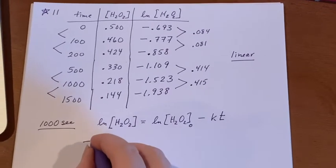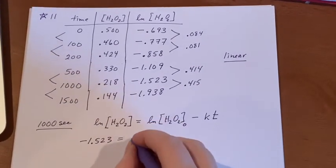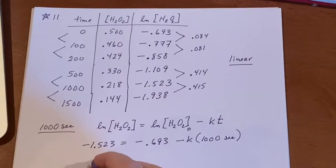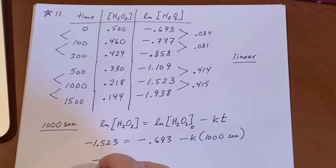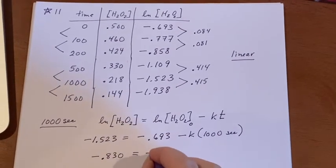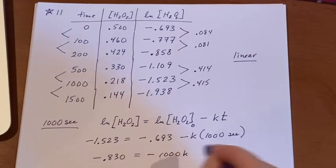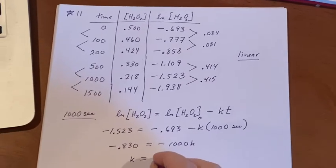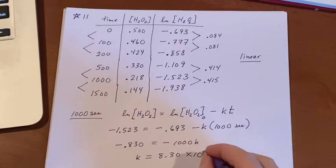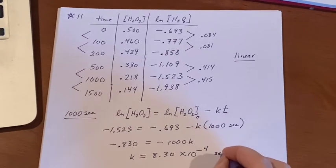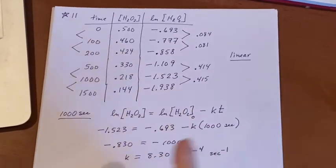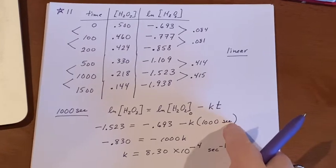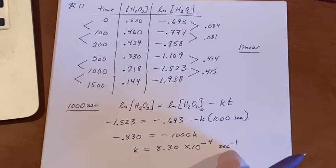This is the one at the 1,000 second mark. This is the one at the zero mark minus K and then times 1,000 seconds. If I do this, I get negative 0.830 equals negative 1,000K. And I would end up ultimately saying that K was 8.30 times 10 to the negative fourth inverse seconds because these being logarithms were just pure numbers. So the only place that we found any units was right here in seconds.